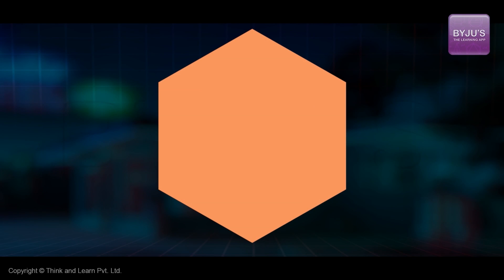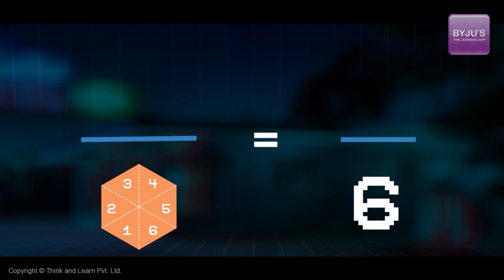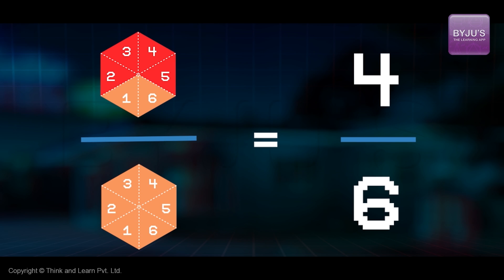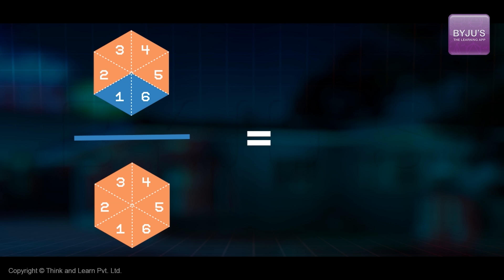The hexagon is divided into six equal parts, which means six comes to the denominator and four are shaded red. So, the fractional representation is four by six. And also, we have two by six as the fractional representation of blue.